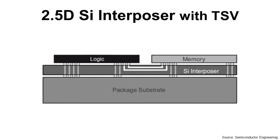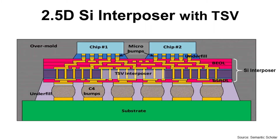The top side of the silicon interposer is also called the front side. In more detail, the silicon interposer has three parts vertically. At the top, there is BEOL — back end of line layer — which uses copper for electrical interconnection. If the line and space of this copper trace is fine, like less than one micrometer, it uses the BEOL layer fab process.